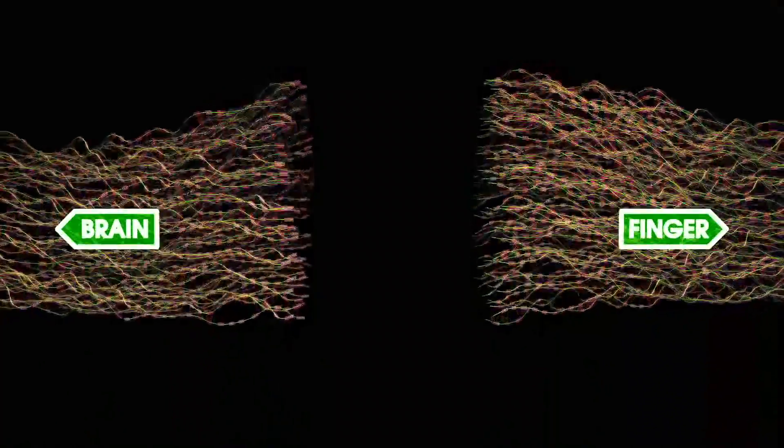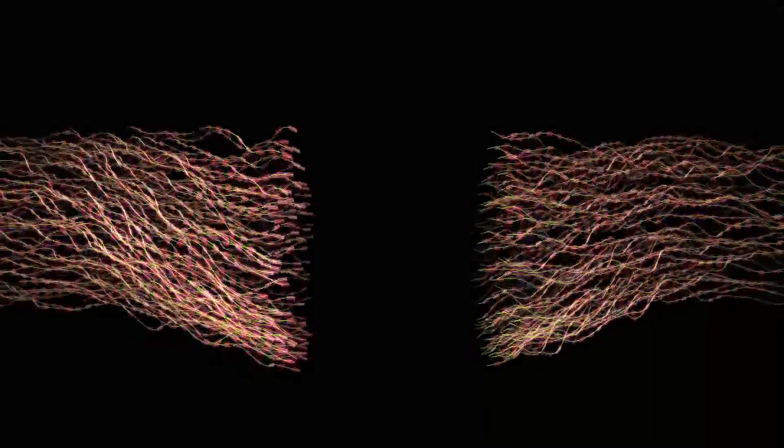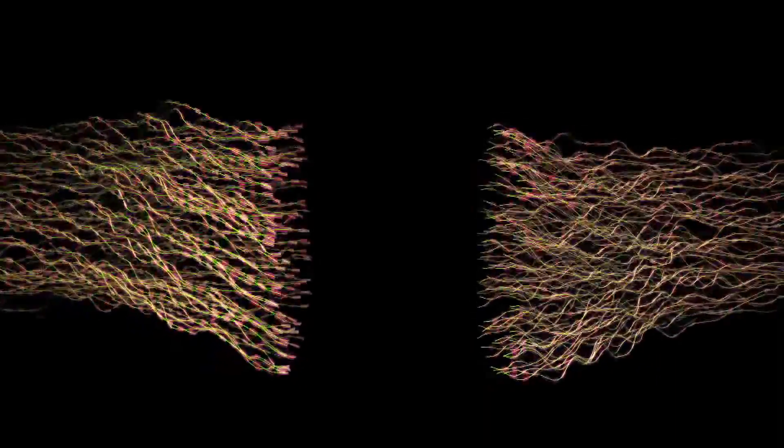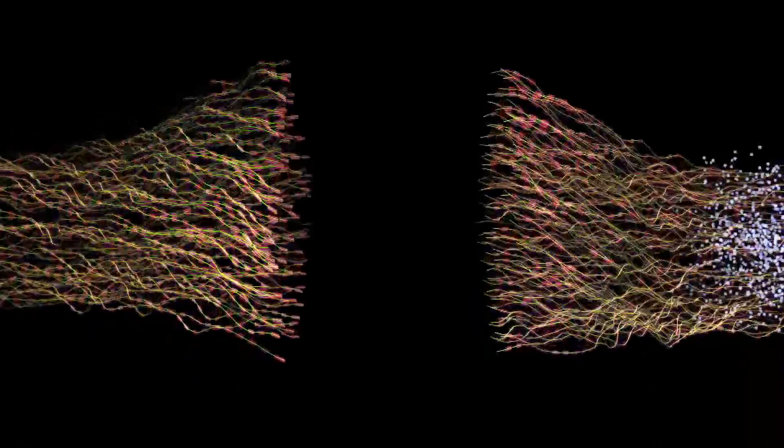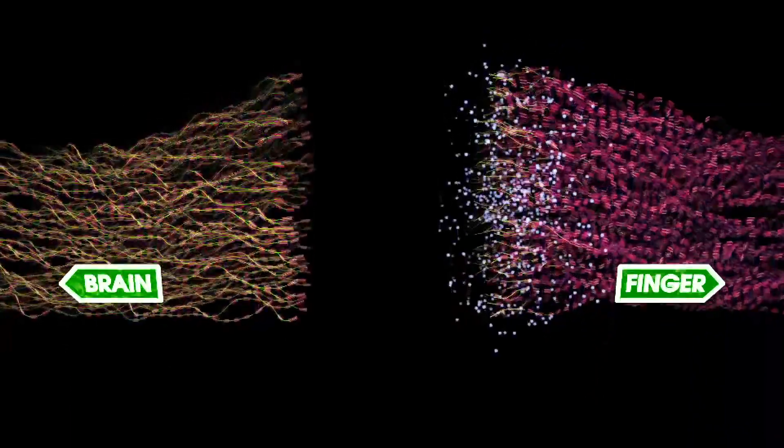The portions of the axons that are connected to the end of the finger have lost their connection with their cell body in the spinal cord and can't survive. This part of the axon will die along with its myelin sheath. The dead remains are broken down and cleared away by immune cells.